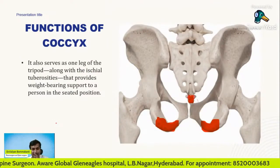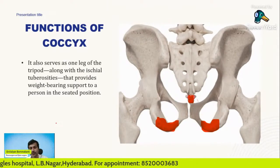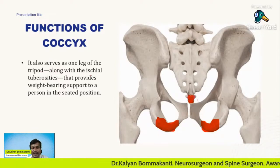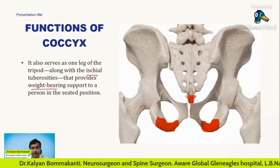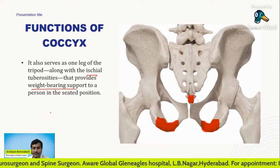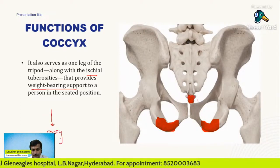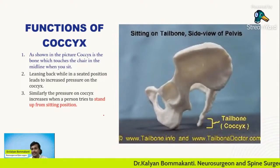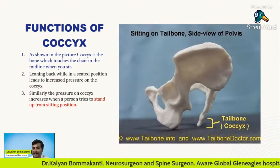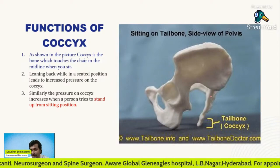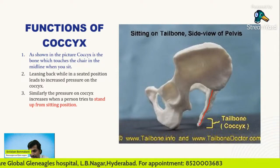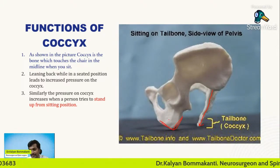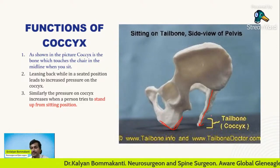This is a very important function of coccyx — understand this because it will help you know why coccydynia causes pain. Coccyx serves as one leg of the tripod, along with the ischial tuberosities, that provides weight-bearing support to a person in the seated position. The three components of the tripod are: in the center we have the coccyx, and on either side we have the ischial tuberosities. So these three are the tripod.